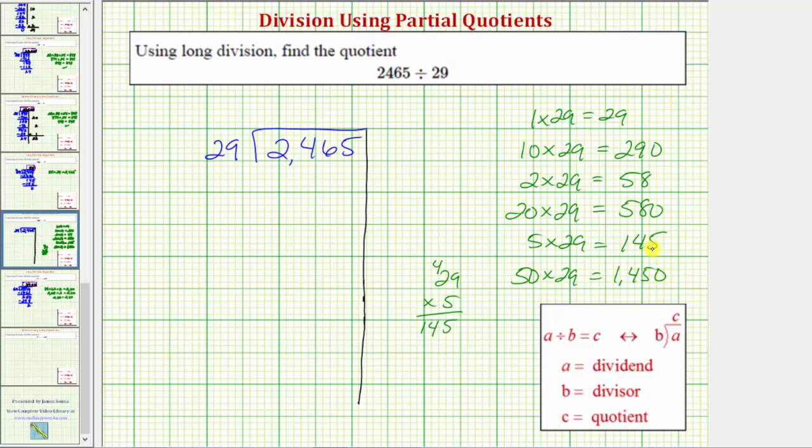So I think these products will be all that we need in order to find our quotient using partial quotients. So to begin the partial quotients method, we consider the entire dividend, and we need to determine a certain number of 29s that we know for sure are in 2,465. Looking at our largest product, because 1,450 equals 50 times 29, and 1,450 is less than 2,465, this tells us there's at least 50 29s in 2,465.